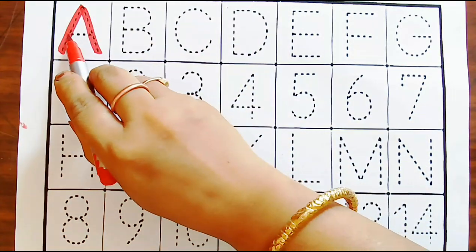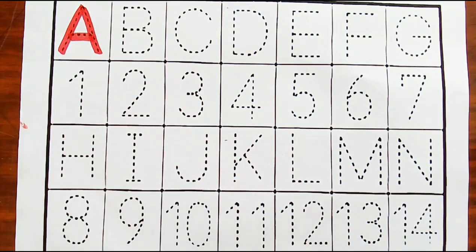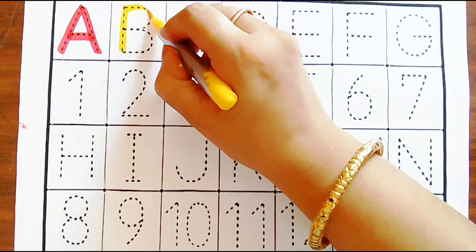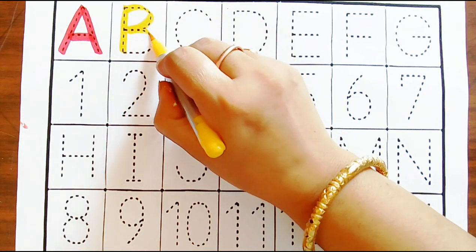A, A for arrow. Yellow colour. B, B for big.